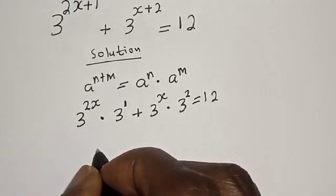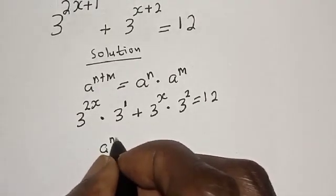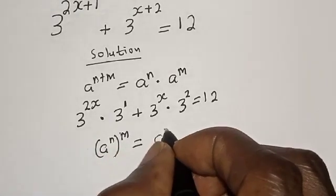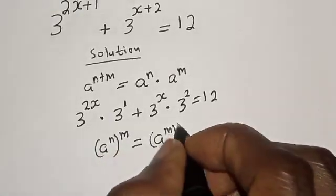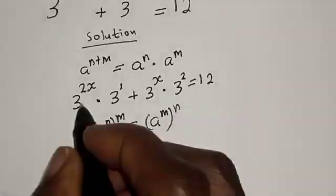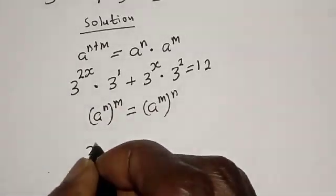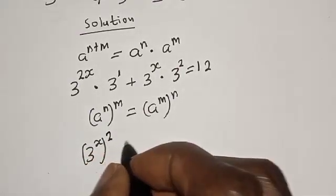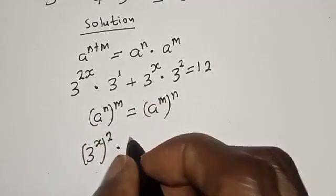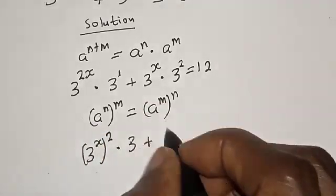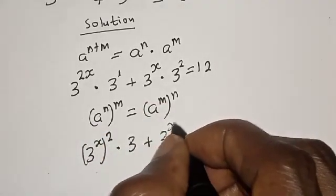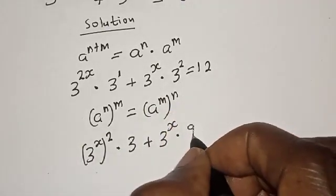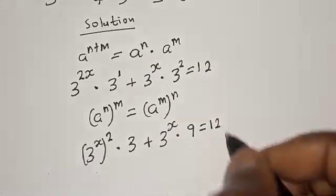Also take note of this rule: a raised to power n raised to power m is equal to a raised to power n times m. So this can be rewritten as 3 raised to power s, raised to power 2, multiplied by 3, which is 3, plus 3 raised to power s multiplied by 9, is equal to 12.